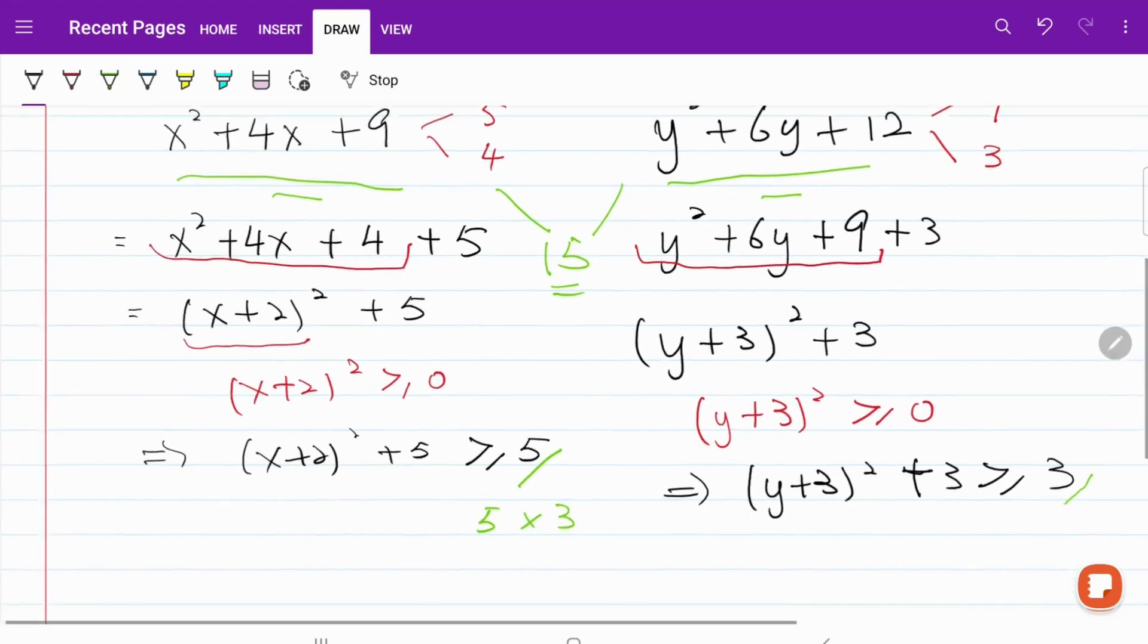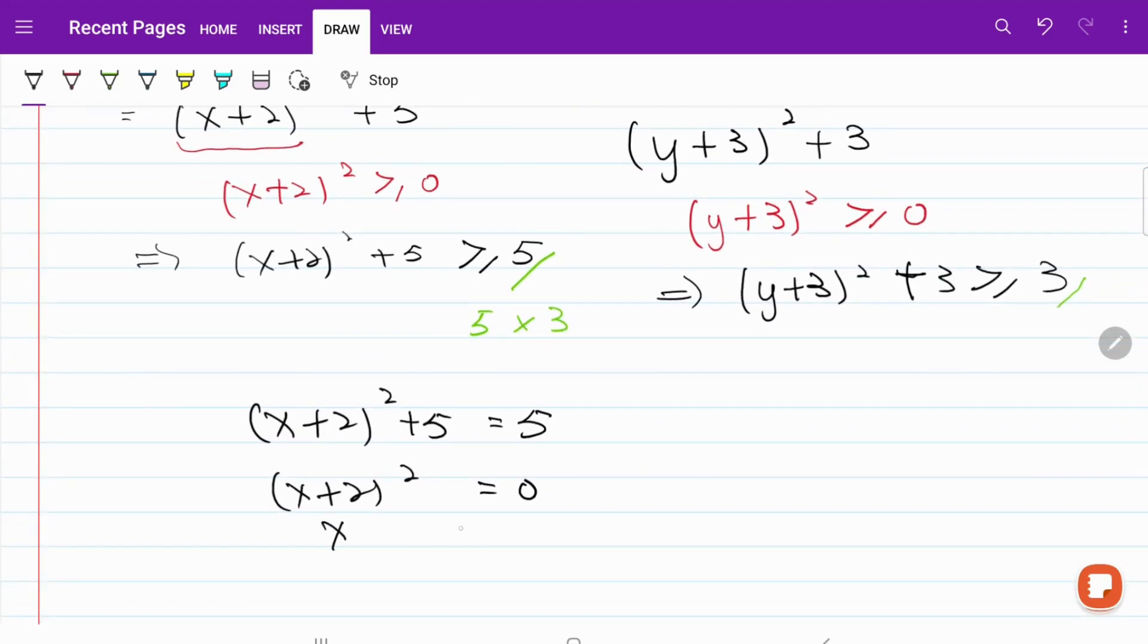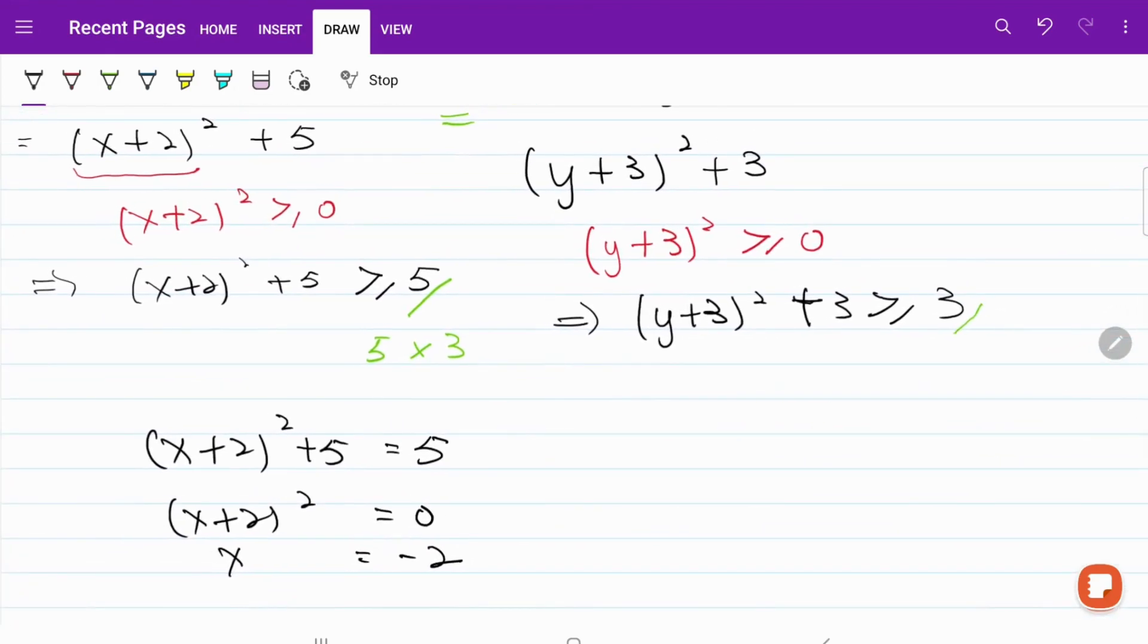So what this means is x plus 2 squared plus 5 is equal to 5. x plus 2 squared equal to 0. So x is equal to negative 2. Likewise, on this side right here, we'll have y plus 3 squared plus 3 equal to 3. y plus 3 squared equal to 0. y is equal to negative 3.